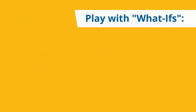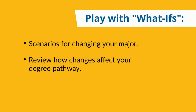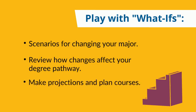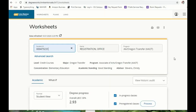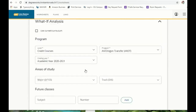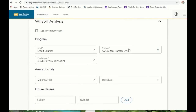You can also explore what-if scenarios in DegreeWorks. This means you can make plans for what it would mean to change your major, review how changes would affect your degree pathway, and then make projections and plan out courses. From your main menu in DegreeWorks, go down and select the What If button right next to Academic, and then you can make projections for what it would mean to change your major.